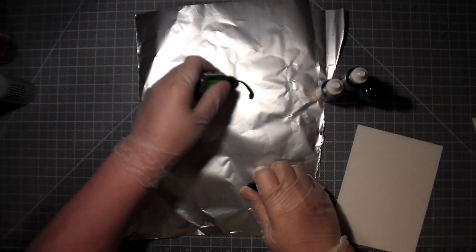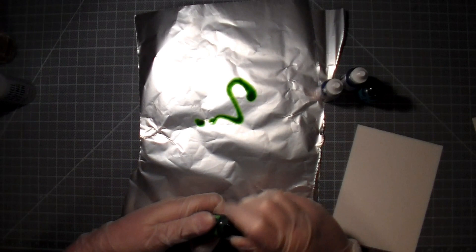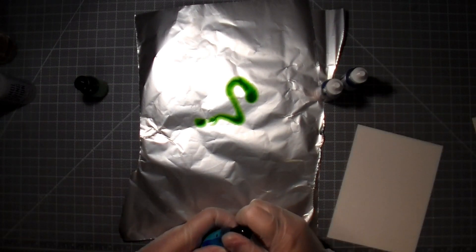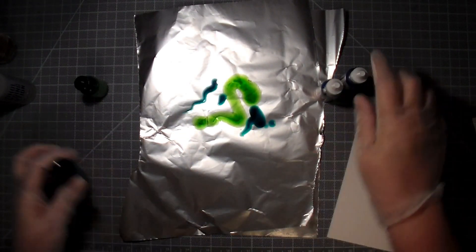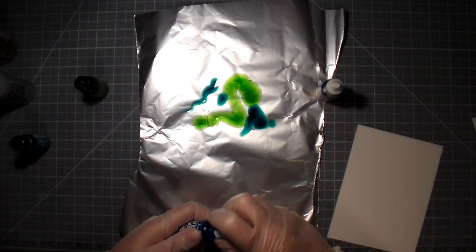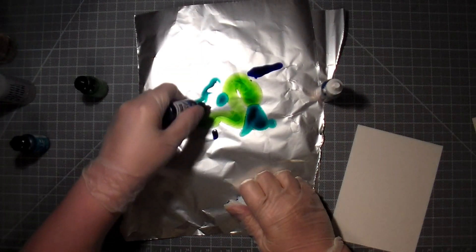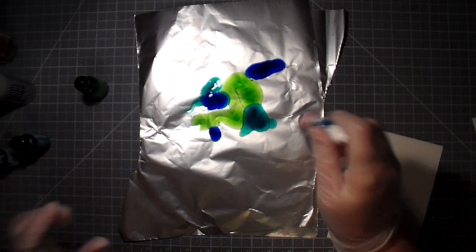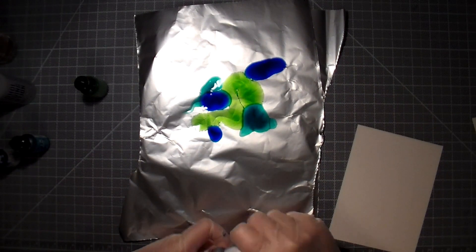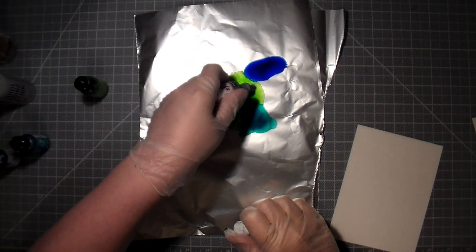So I'm going to start by smooshing and I'm just going to randomly add four colors of alcohol inks onto my foil. The last color is metallic silver and that has to be shaken up to blend it well before you use it. I'm just going to add a couple little drops.